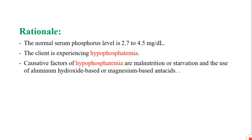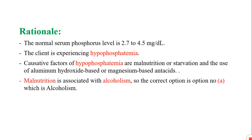The causative factors of hypophosphatemia include malnutrition or starvation, and use of aluminum hydroxide-based or magnesium-based antacids. Malnutrition is associated with alcoholism, making alcoholism the most likely cause.